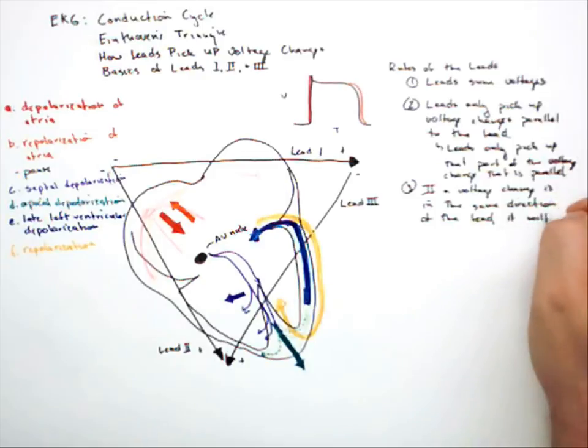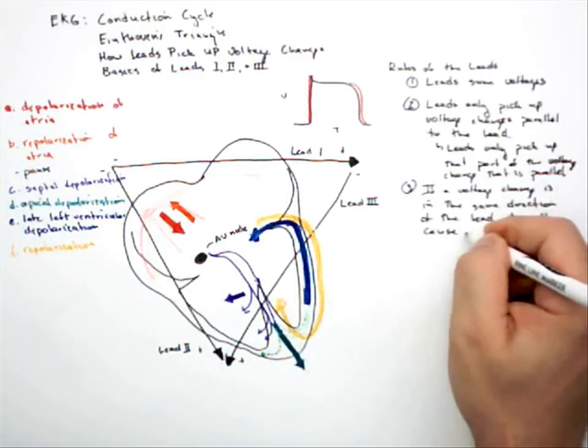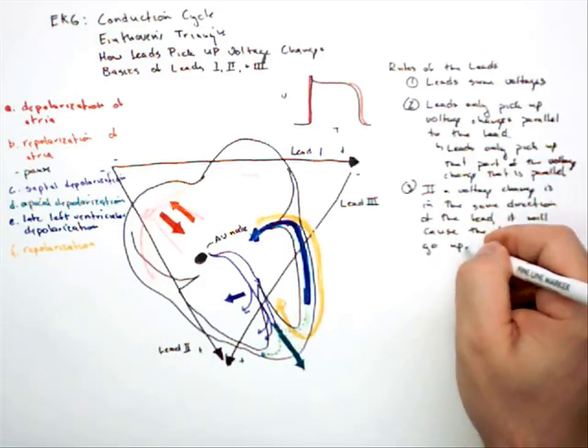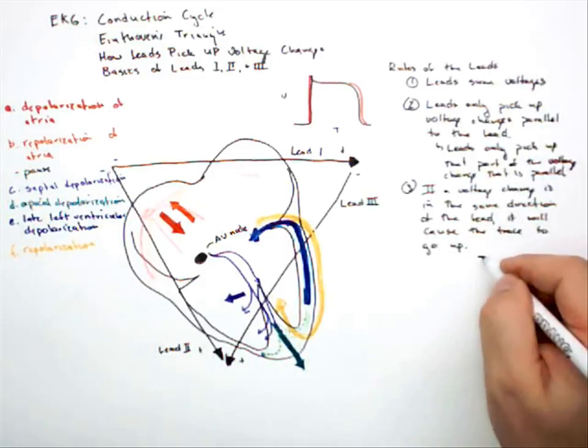And what it means is if a voltage change is in the same direction of the lead, it will cause the trace to go up. It'll go up on EKG paper, so it would go up.